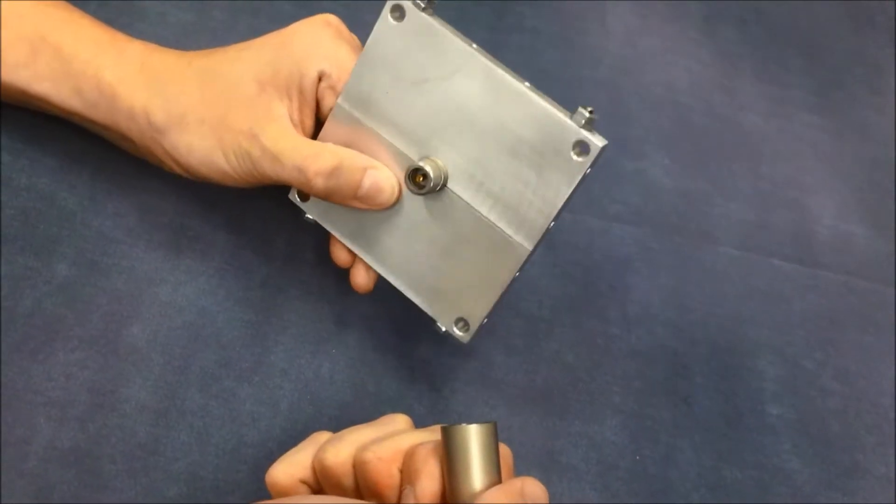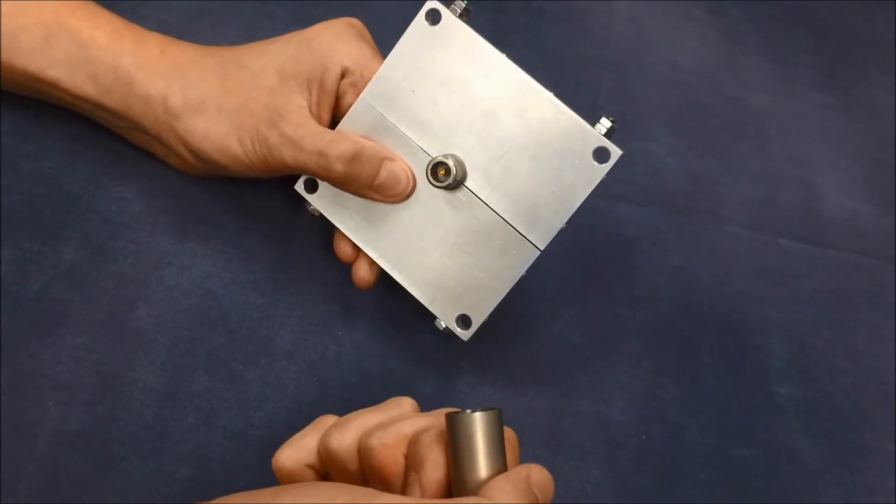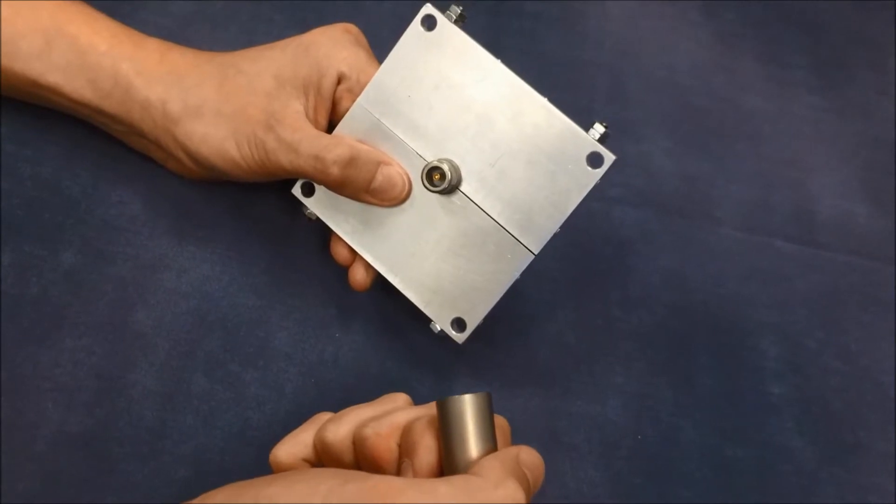This is a great example of multifunctional use of the canted coil spring since it can be used for mechanical connection and at the same time provide effective EMI shielding.